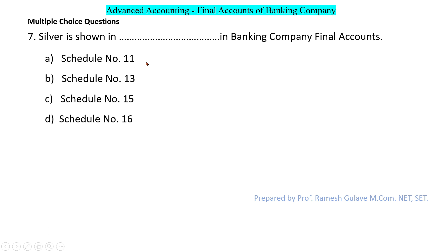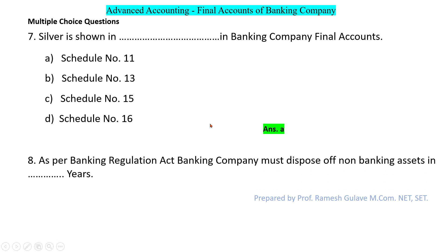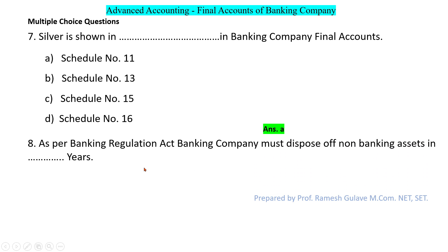The next question relates to silver. Silver is shown in schedule number 11 as 'Other Assets', so option A is the right answer.